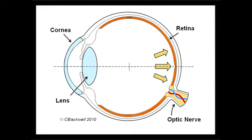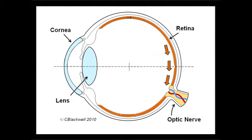Further inside the eye is the retina, which sends light impulses that are carried on the optic nerve to the brain.